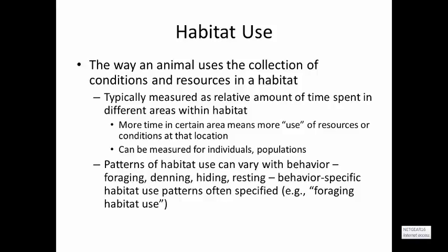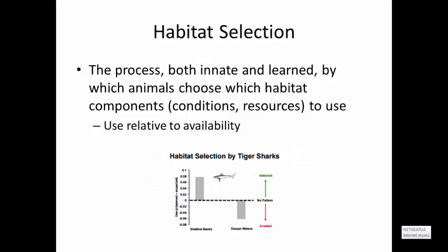Habitat use will change based upon what the organism is doing. You'll have behavior-specific habitat use, such as foraging behaviors, denning behaviors, resting, nesting, or reproductive behaviors. Habitat use is essentially tracking where the organism is picking up the resources it needs for survival.